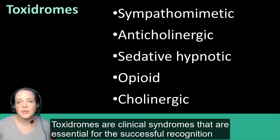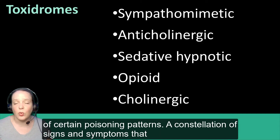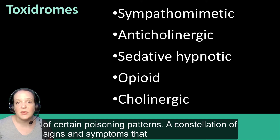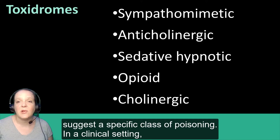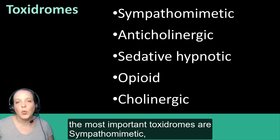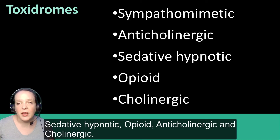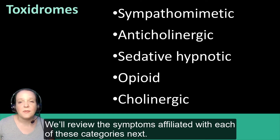Toxidromes are clinical syndromes that are essential for the successful recognition of certain poisoning patterns — a constellation of signs and symptoms that suggest a specific class of poisoning. In a clinical setting, the most important toxidromes are the sympathomimetic, sedative-hypnotic, opioid, anticholinergic, and cholinergic. We'll review the symptoms affiliated with each of these categories next.